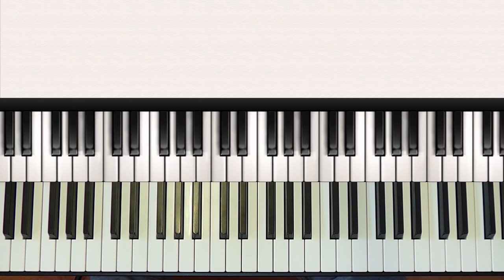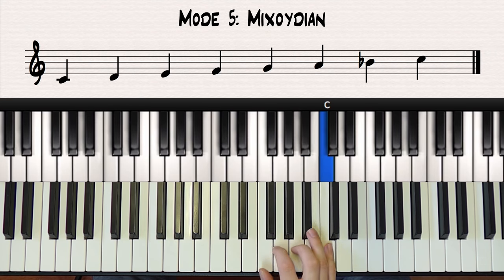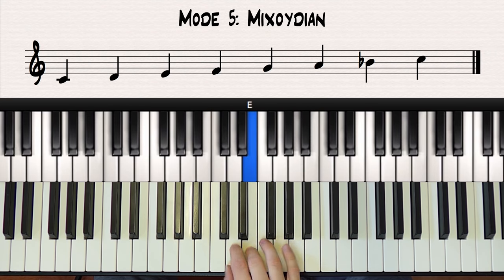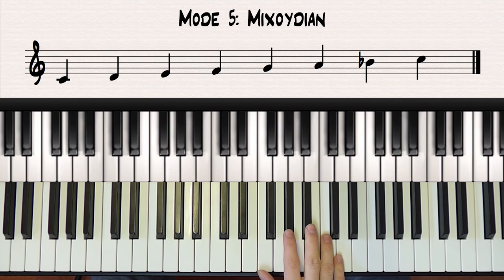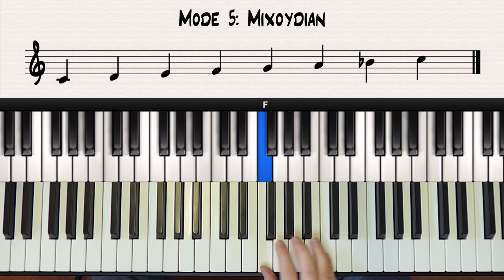The next mode is called the Mixolydian mode. It's the fifth mode of the major scale and it's just a major scale with a flat seven, or an F major scale starting and ending on the note C. This mode is used in blues quite a lot and it's also used in jazz to build up tension on dominant seventh chords.